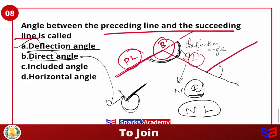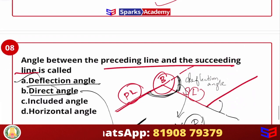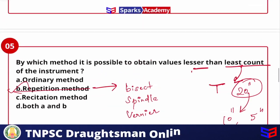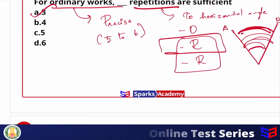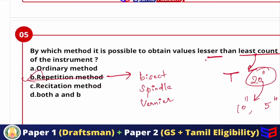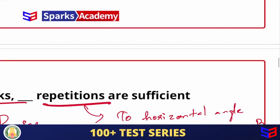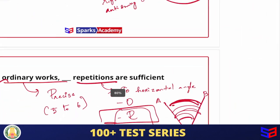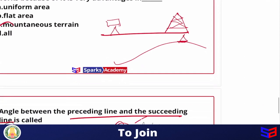These are important MCQs from the theodolite surveying topic, covering concepts like prolonging line methods and repetition methods — topics with high chances of appearing in exams. Stay tuned with Sparks Academy. Thanks for watching.